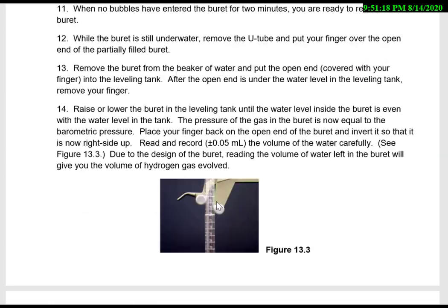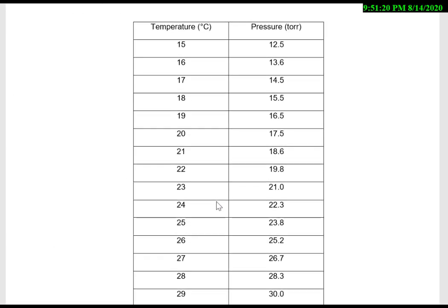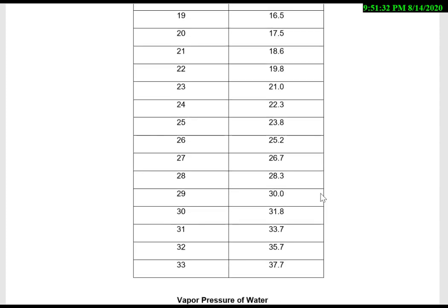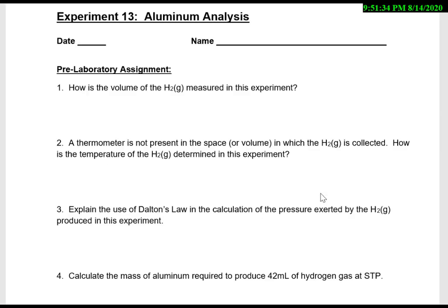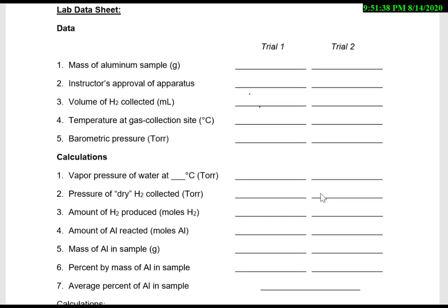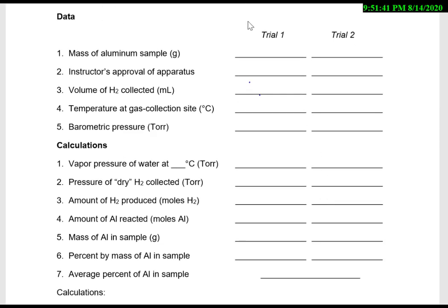The procedure is shown in the video. Here is the vapor pressure of water at different temperatures, so once we know the temperature that our gas is collected at, we'll come find what the pressure of the water vapor is so that we can subtract it out. You'll complete all of the pre-lab, and then for the data, trial one will be provided in the video. Trial two will be provided in the data info sheet, so you'll complete the same calculations but using different values.